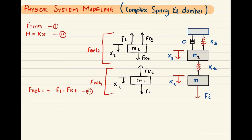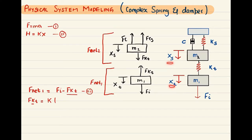Now we need to find FkT. FkT equals Kt times displacement, and the displacement is taken between XT and XS — the movement is from XT to XS. So FkT equals Kt times (XT minus XS), which is equation number four. I will put the link for the related earlier video in the description.